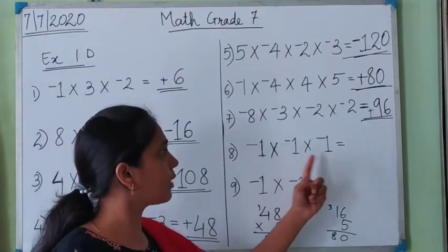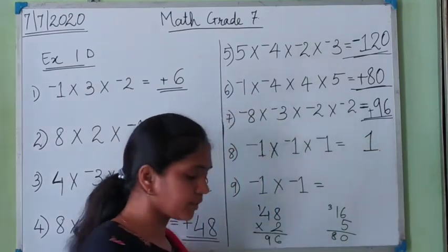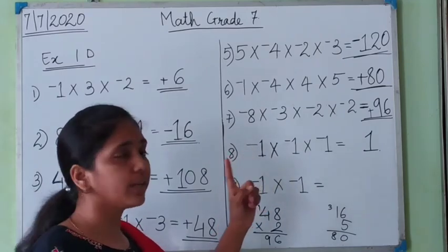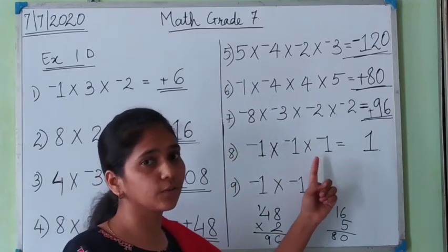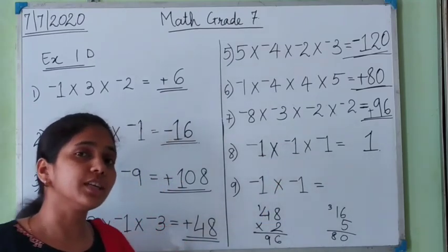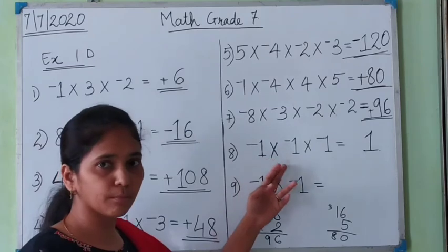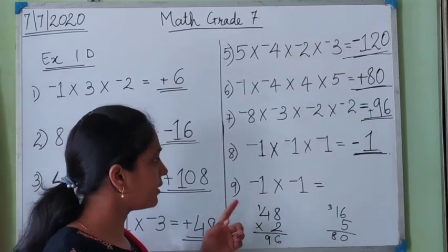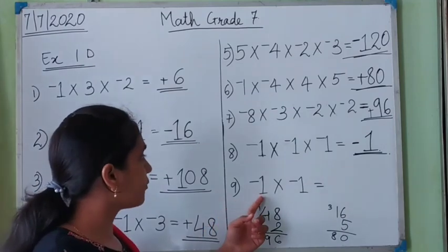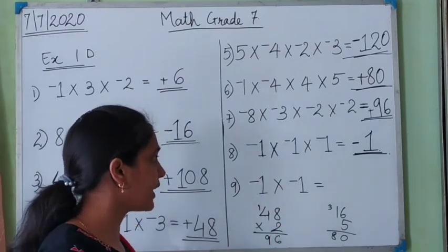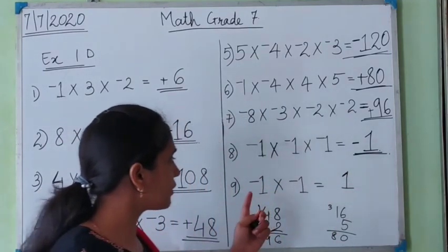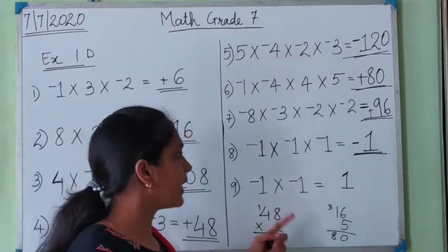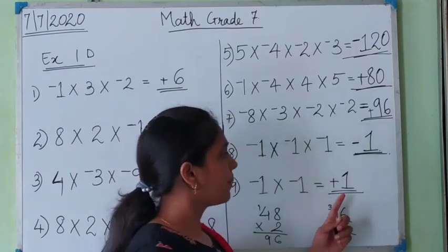In the next example, the multiplication of 1 into 1 into 1 is 1. How many negative numbers are there? There are 3 negative 1s — three is an odd number, so the answer will be negative. The answer is negative 1. In the last example, negative 1 multiplied by negative 1 gives 1. There are 2 negative numbers, and 2 is even, so if even negative numbers are multiplied, the answer will be positive. The answer is positive 1.